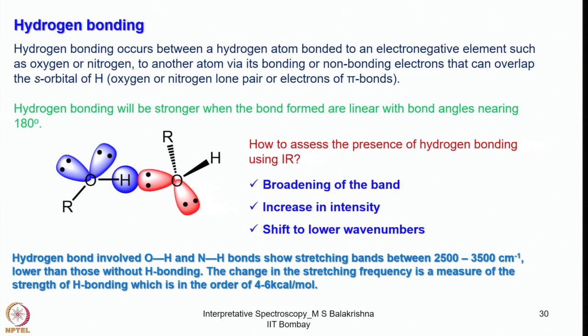When the hydrogen bonding angle is linear — approximately 180 degrees — the hydrogen bonding will be much stronger. It can be anywhere from approximately 170 to 180 degrees. If it is less than 170 degrees, then the hydrogen bonding is considered weak.